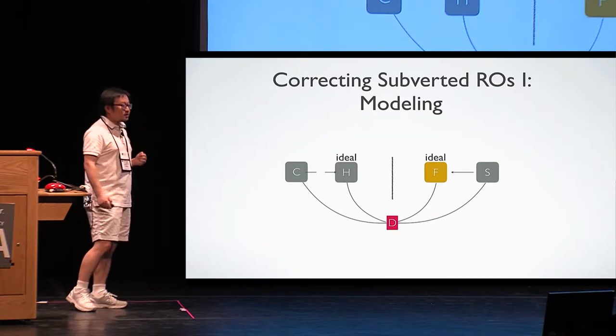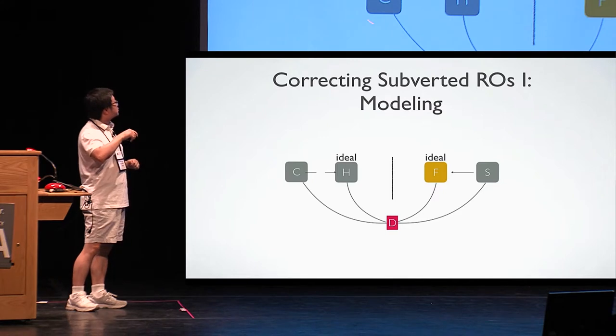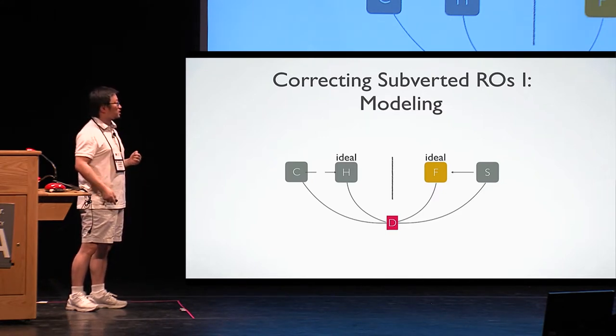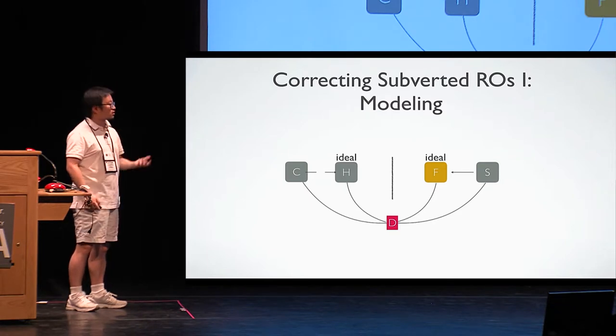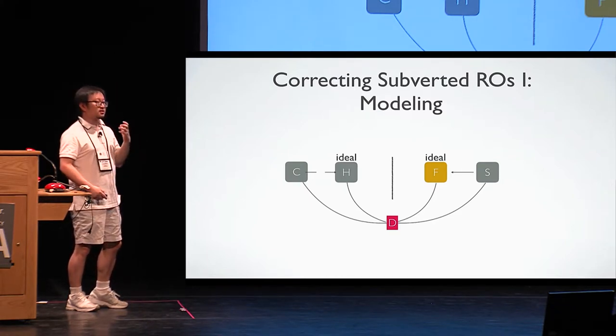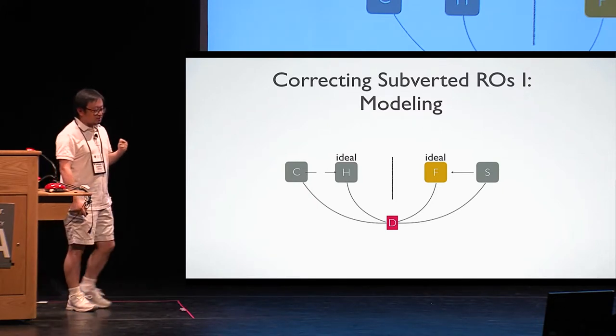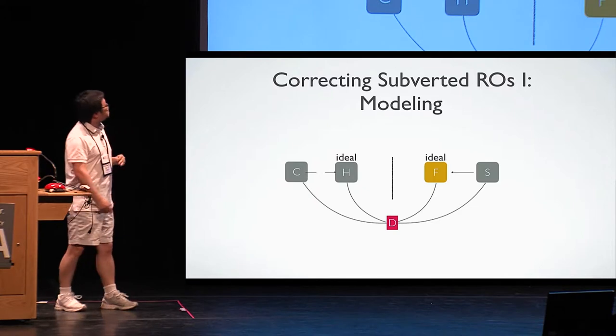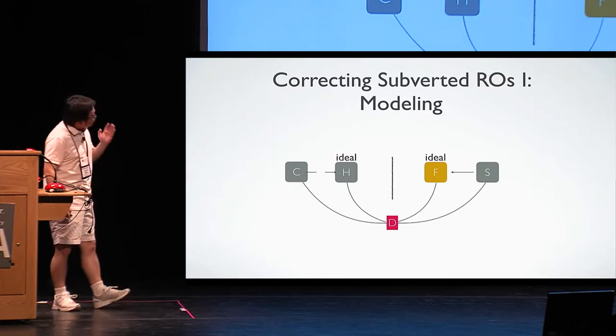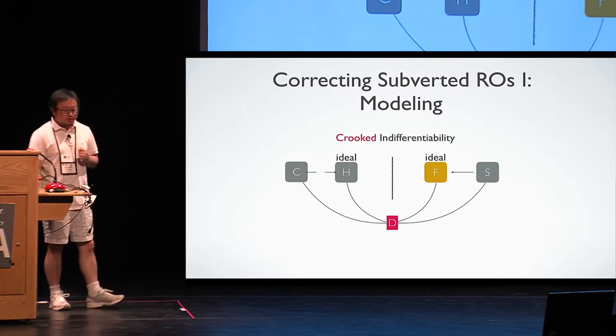Now we want to model a similar thing. But now we immediately meet a trouble. So first, the construction in now setting actually doesn't even have direct access to the original ideal object, the original random oracle, because it can only access via the malicious implementation. Actually, to tailor this model to reflect our setting, it's quite highly non-trivial.